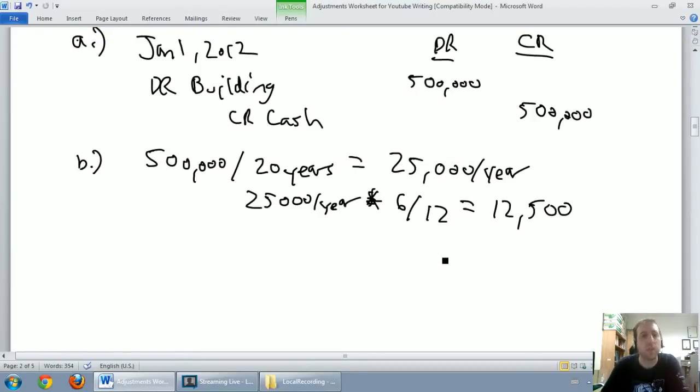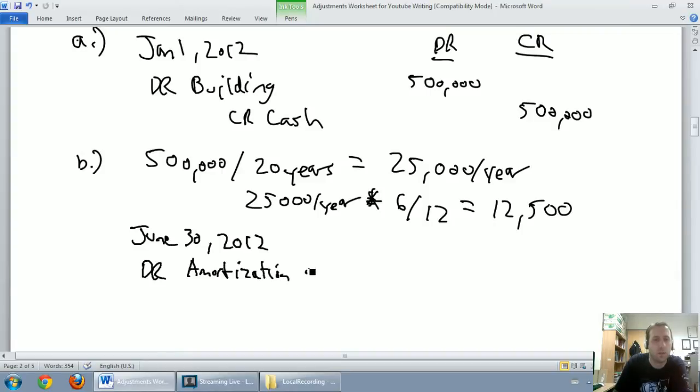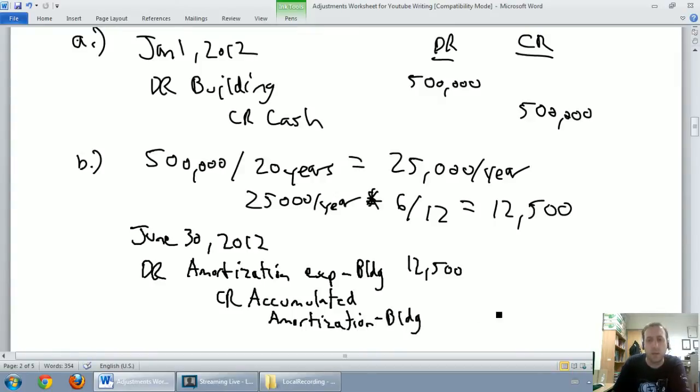The journal entry for amortization is really simple, but you just need to memorize it. There's no real trick here. Just remember, this is what all amortization journal entries look like. On June 30th, 2012, we're going to debit amortization expense, and we'll note that it's on our building, and the amount is $12,500. Then we're going to credit accumulated amortization, and this is a special account called a contra-asset account, and we'll discuss that in a second. We're going to credit accumulated amortization on our building, again, for $12,500.